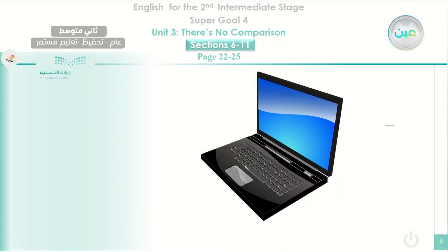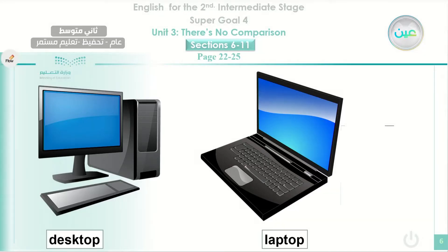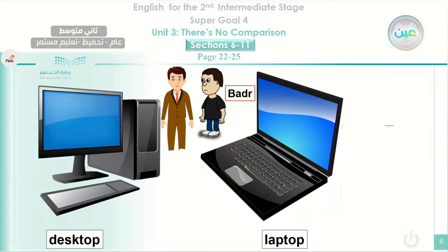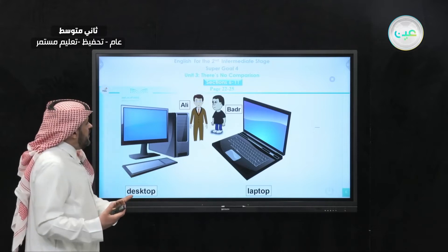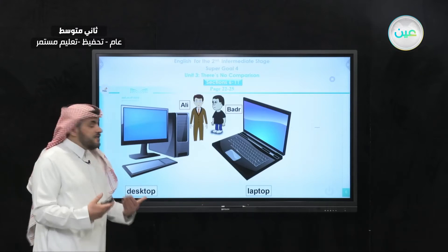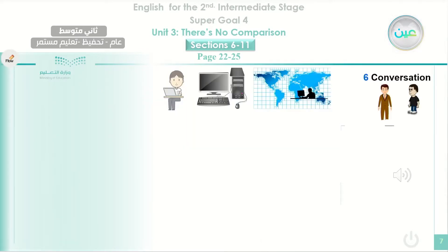You will read the conversation now. The main topic is about a laptop and a desktop. This conversation is between Badr and Ali. Badr thinks the laptop is better than the desktop. Now let's read this conversation and find out what Ali says and how he tries to convince Badr that the desktop is better than the laptop.